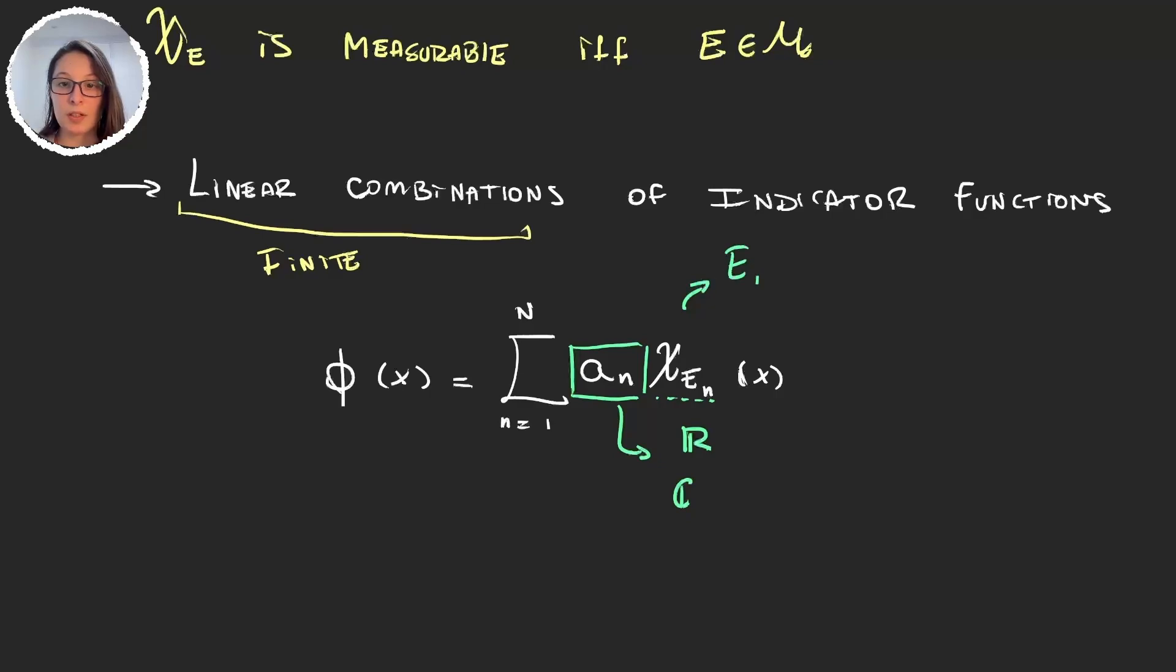Then to define these indicator functions, what we need are sets E₁, E₂, and so on up to Eₙ in our sigma algebra. So given a finite amount of sets in our sigma algebra and some coefficients, we can form a simple function φ.